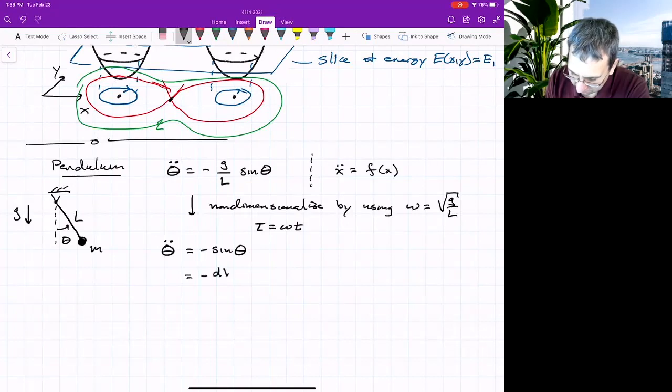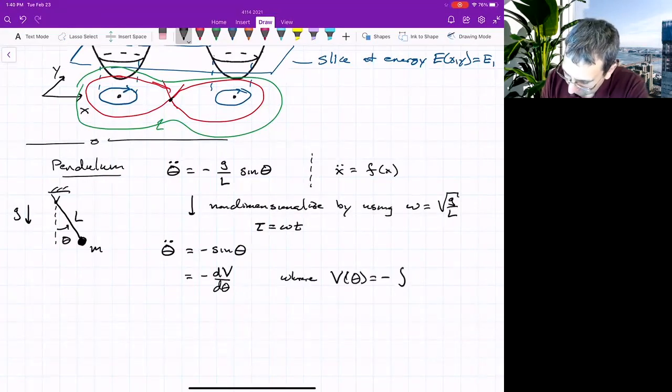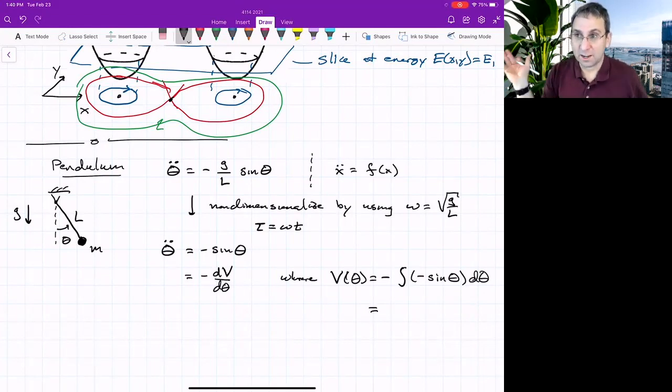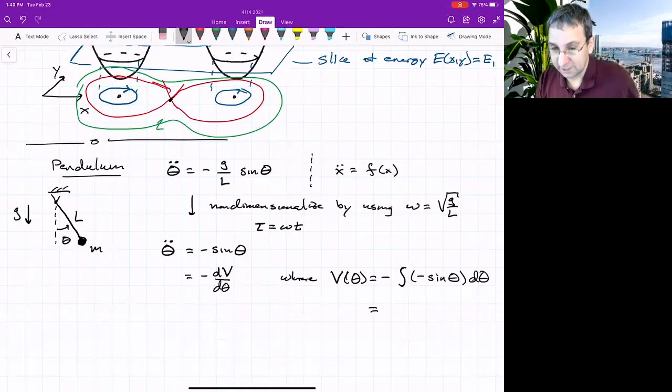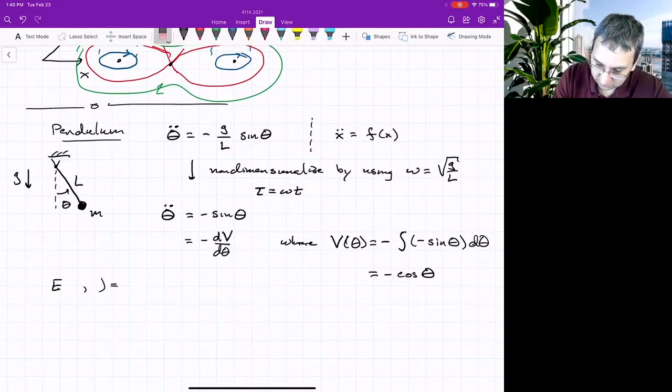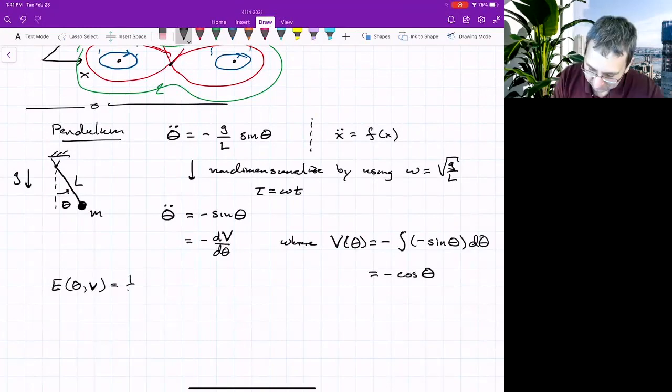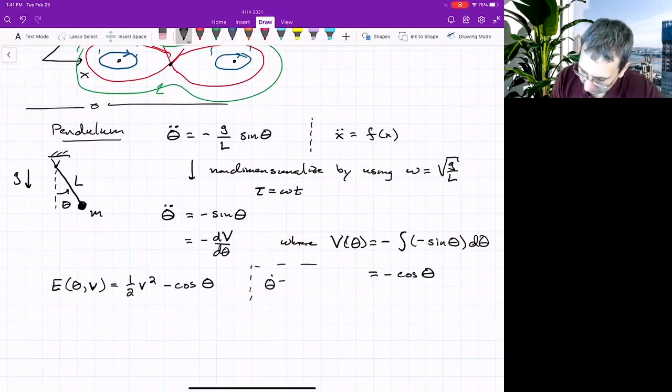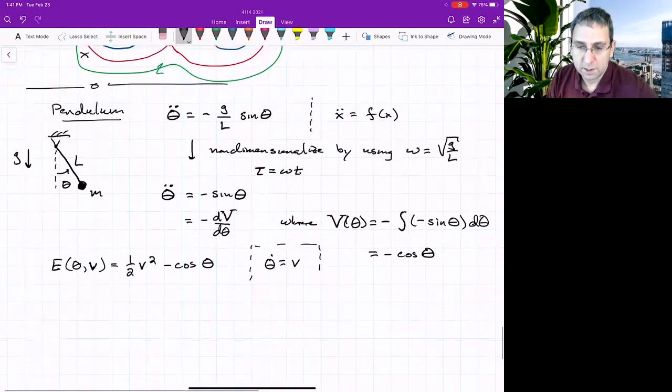Following the procedure from up above, we say, well, this is equal to a negative derivative of a potential energy V with respect to theta, where V is negative the integral negative sine theta D theta. If you work out what that is, you'll get cosine theta. And anything that doesn't depend on theta doesn't matter. So you might be worried about constants of integration. They don't matter. So then this tells us what the energy is, total energy theta. And then I'll call the other one, hopefully not to be confusing, but V. So this is one half V squared minus cosine theta. We're saying here that theta dot equals V. That defines this little V, not capital V. We'll write it that way. Make it easier. So now we've got our energy.